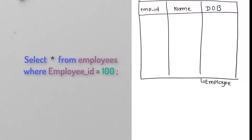As you can see on the left-hand side, I have written one query: SELECT * FROM employee WHERE employee_id = 100. Now let's understand how exactly it internally works and how exactly this query will come to know which row it's supposed to pick up from the employee table.